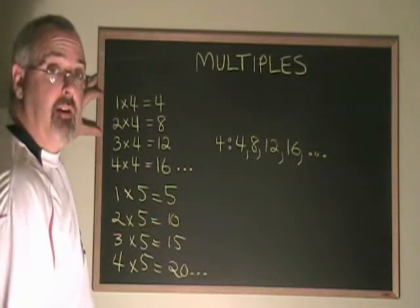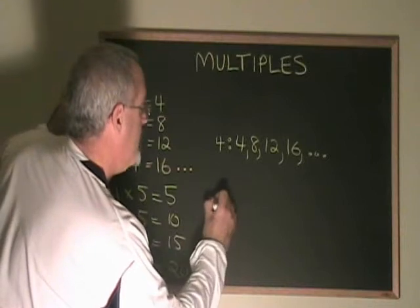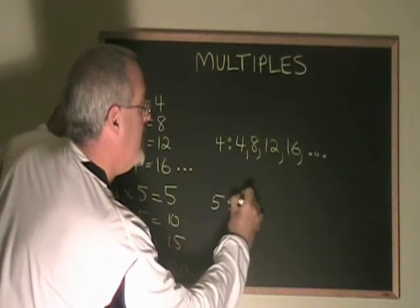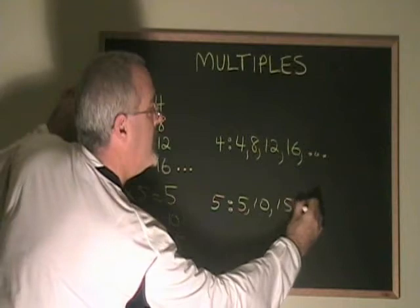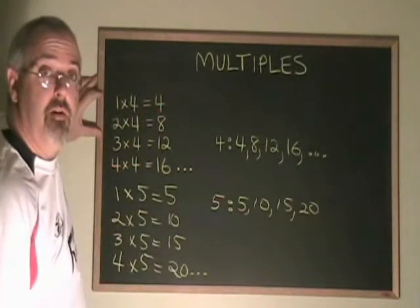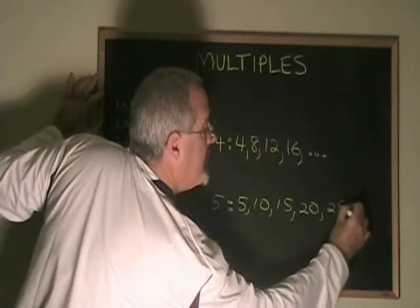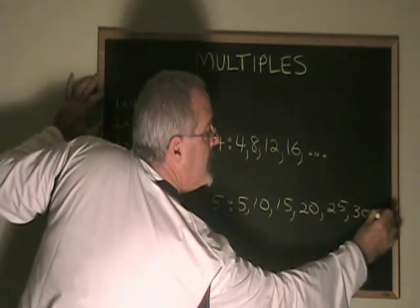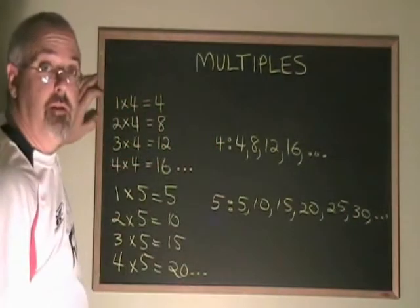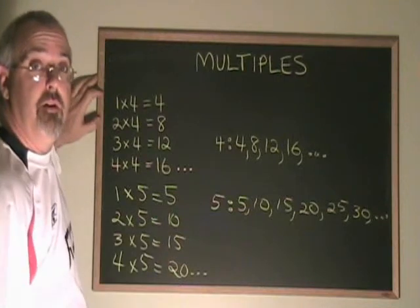Now we can list the multiples of 5: 5, 10, 15, 20. And if we need to, we can go further. We can put 25, 30, and so on. You'll notice that I am adding 5 each time.